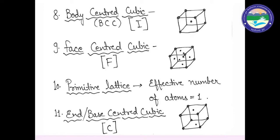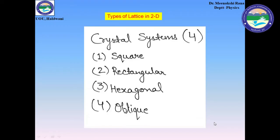Primitive lattices are those in which the effective number of atoms is 1 — meaning only atoms completely within the lattice are counted. The end-centered or base-centered cubic, denoted by C, has atoms at the corners of the cubic cell and at any one pair of opposite faces.